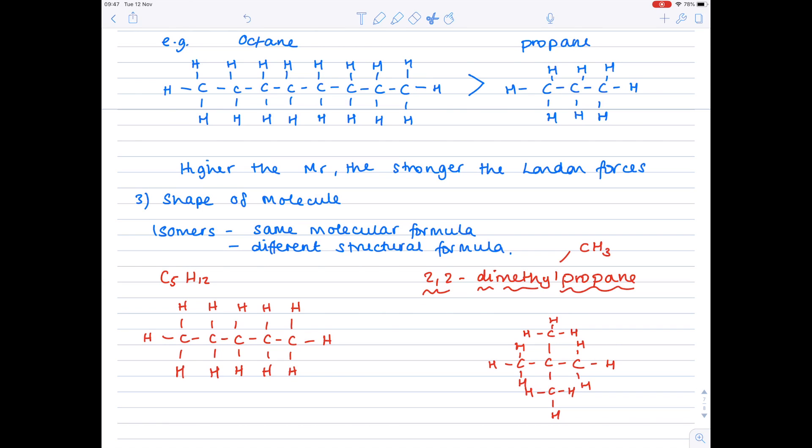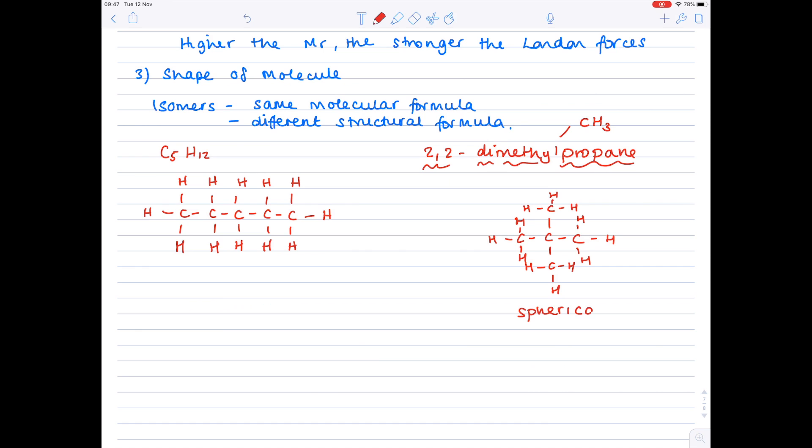So, just check the formulae. Make sure that they're both C5H12, which they are. And now have a look at the shape of them. Look, 2,2-dimethylpropane is very spherical in shape, whereas C5H12, pentane, has a linear shape.